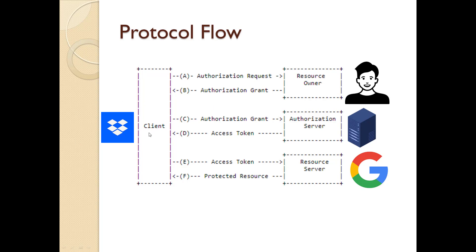What actually happens is: if any client like Dropbox or CSV Photo — whatever we saw in the last video — wants to provide facilities like logging in with your Google account or uploading photos from Google Photos, that client must register with Google. When this client registers with Google, Google provides something called a client ID and client secret. Similarly, if the client is allowing login via GitHub, it needs to register with GitHub to obtain the client ID and client secret.